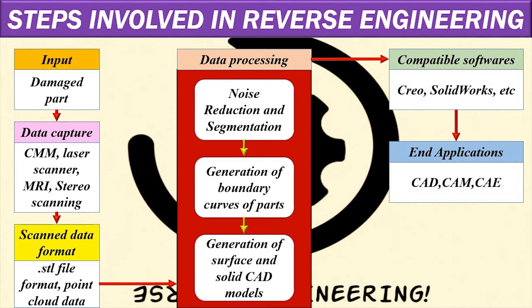This is the scan data format — this is the point cloud data. This is a group of cloud data points. This is the data processing stage, which includes noise removal and segmentation. This is the generation of boundary curves for parts. Once you have the points, you can create boundary curves. Once the boundary curves are created, you can generate the surface model. For a small part, this is called carving and building. This is the solid model — that means from the damaged or existing part we create the solid model.